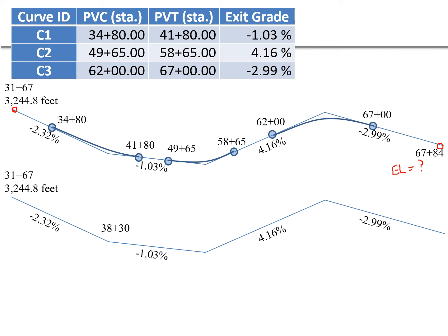For a symmetric parabolic curve — which is our standard assumption for vertical curves — the PVI is always halfway between the PVC and PVT. So for curve C1, the PVI station is 38 plus 30. For curve C2 it's 54 plus 15, again the midpoint between the PVC and PVT. And for curve C3 it's 64 plus 50, the midpoint between 62 and 67. We're looking for the final point at station 67 plus 84.